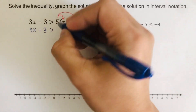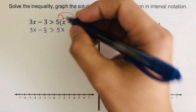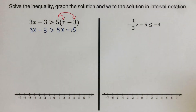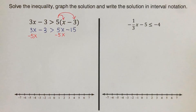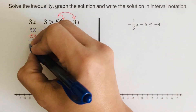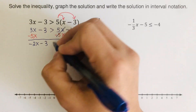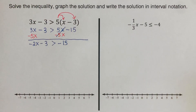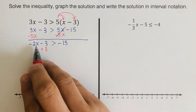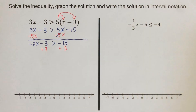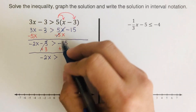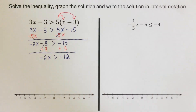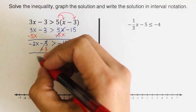From here we rewrite this as 3x minus 3 greater than — that's 5 times x is 5x, and 5 times negative 3 is negative 15. From here we subtract 5x from both sides, so we are left with negative 2x minus 3 is greater than negative 15. Then we add 3 to both sides, because we want x isolated on the left side, so we are left with negative 2x is greater than negative 12.